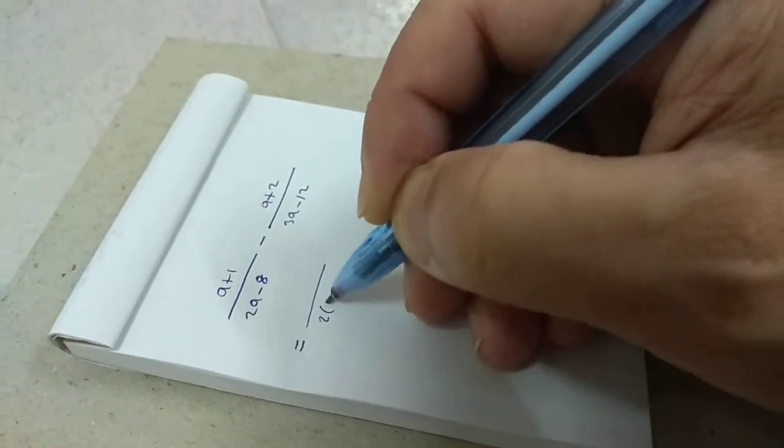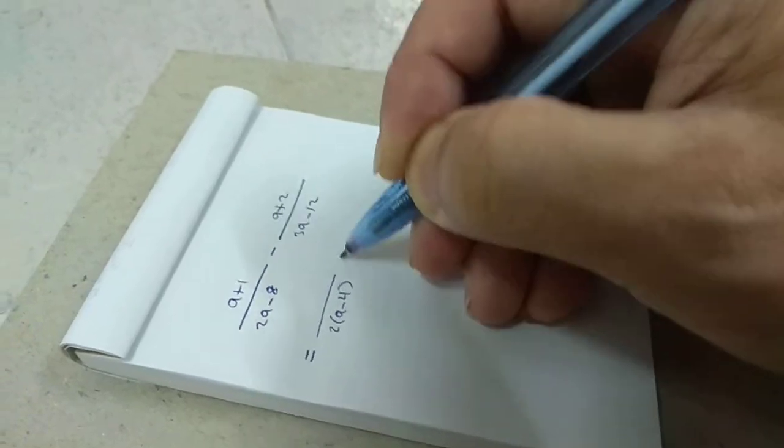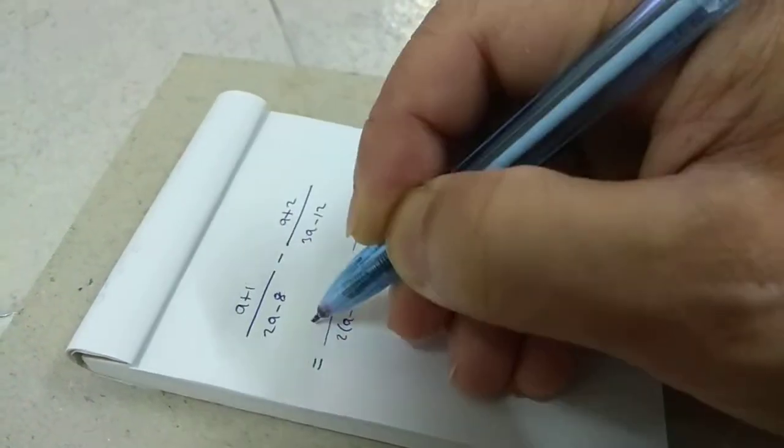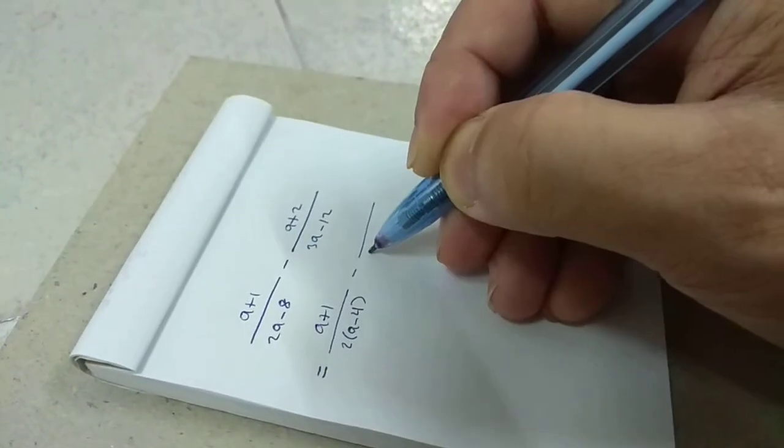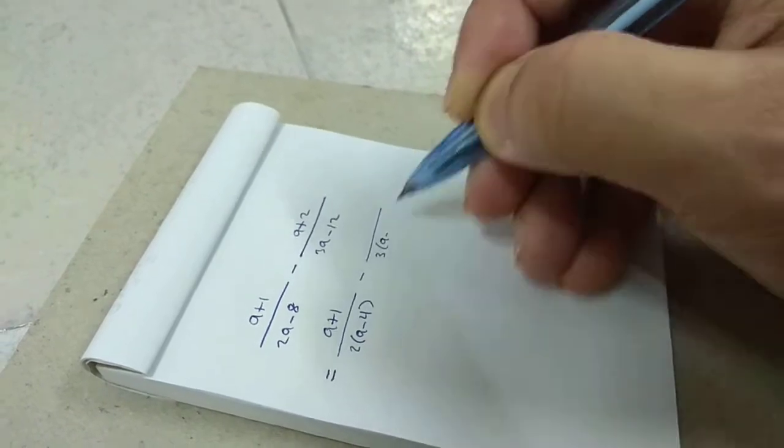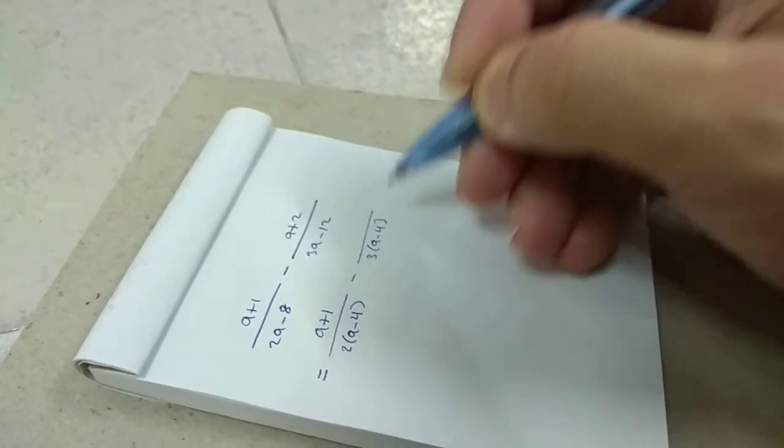Factor the first denominator: 2 times a minus 4. Factor the second denominator: 3 times a minus 4.